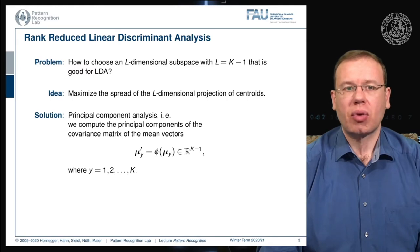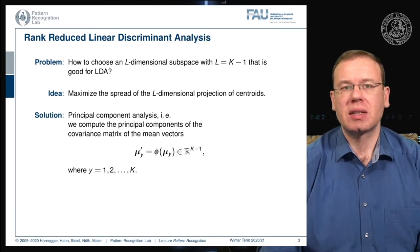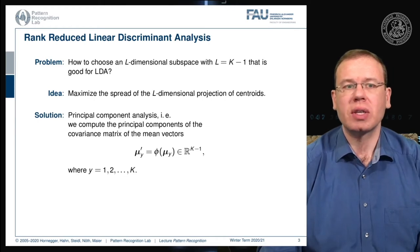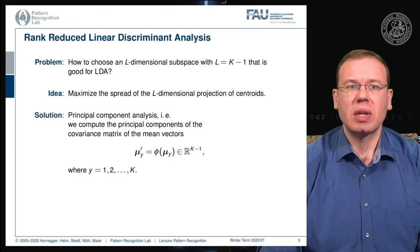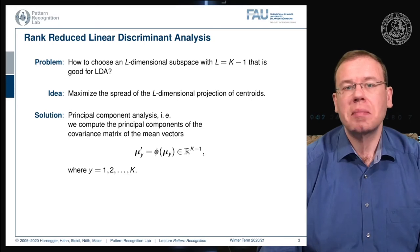Our problem is how to choose an l-dimensional subspace where l equals k minus one, and k is the number of classes. This subspace should be good for linear discriminant analysis. The idea is to maximize the spread of the l-dimensional projection of the centroids, and we already know a method that can do that: principal component analysis. We calculate the principal components of the covariance of the mean vectors.